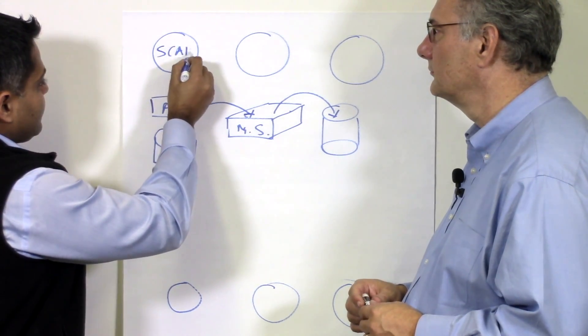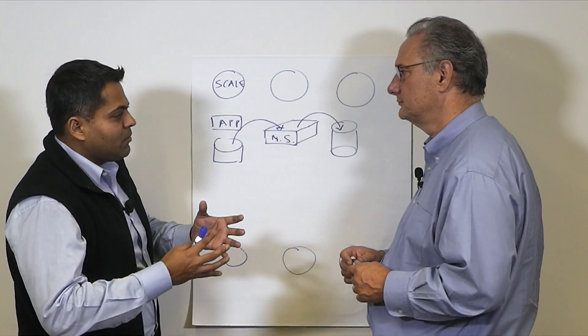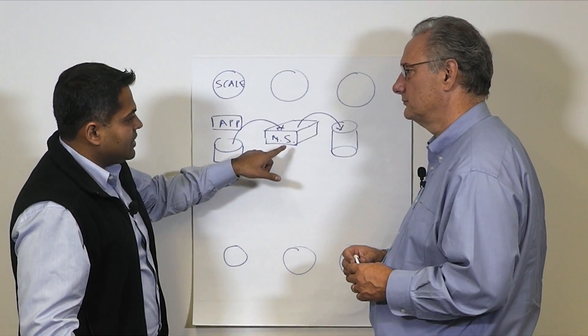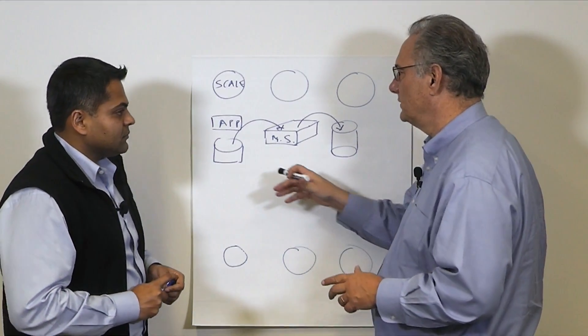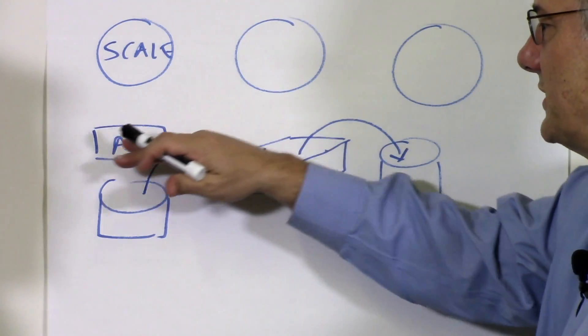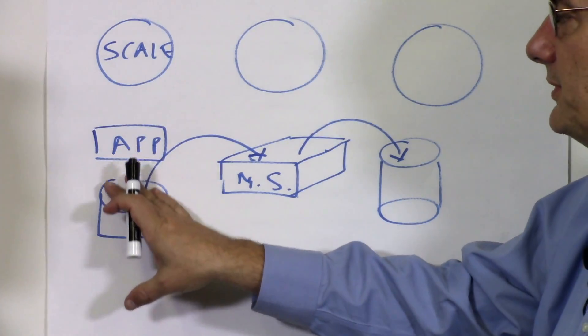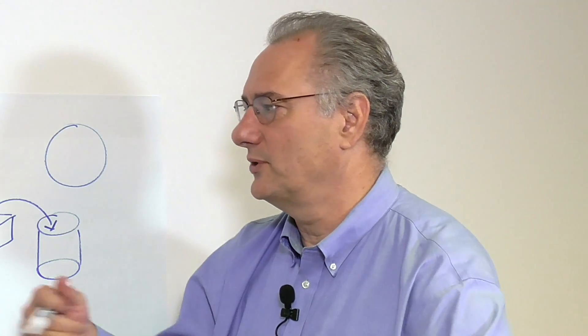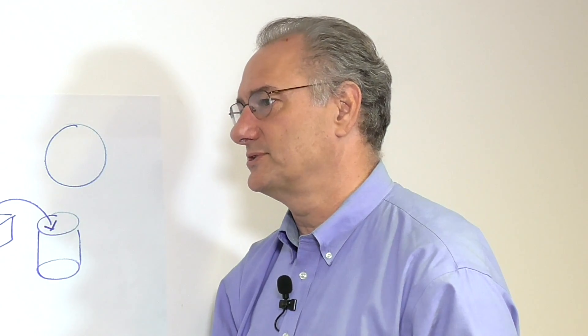The first one really is scale. As we look at the applications and the volume of data growing, the media server really becomes a choke point. We all know about the problems with backup windows extending overnight. That really becomes a bottleneck in handling the scale of data. Traditionally, we handled that by buying more media servers — really expensive boxes. But what happened when a single application or server can't fit through a media server? That was something these systems weren't really designed to handle.